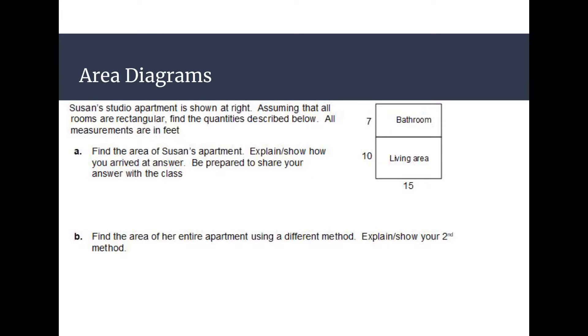We have Susan's studio apartment shown at the right. Assuming that all the rooms are rectangular, find the quantities described below. All measurements are in feet. So we want to find the area of Susan's apartment. Explain how you arrived at the answer and be prepared.